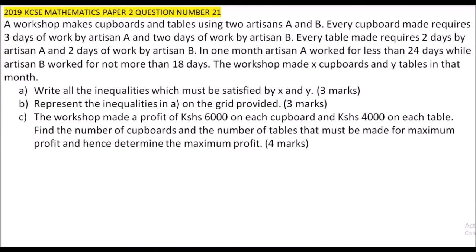This is a 2019 Paper 2, Question 21. We are told a workshop makes cupboards and tables using two artisans, A and B. Every cupboard made requires three days of work by artisan A and two days of work by artisan B. Every table made requires two days by artisan A and two days by artisan B. In one month, artisan A worked for less than 24 days while artisan B worked for not more than 18 days. The workshop made x cupboards and y tables in that month.